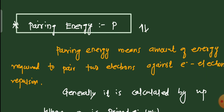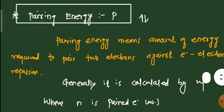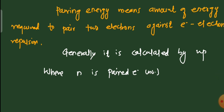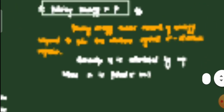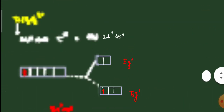Pairing energy is a concept that arises in the context of strong field ligands. In a strong field, all electrons are paired, violating Hund's rule, while in a weak field, Hund's rule is obeyed and electrons remain unpaired. Pairing energy is the amount of energy required to pair two electrons against electron-electron repulsion. It is generally calculated based on the number of forced pairings (np), where n is the number of paired electrons.